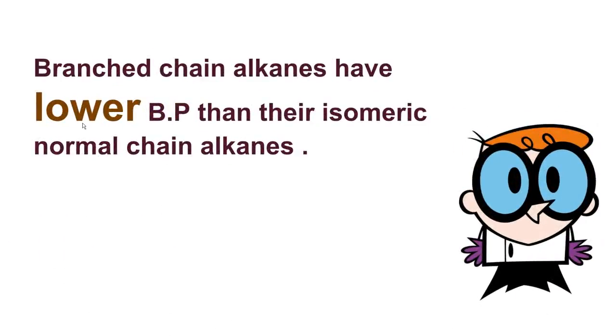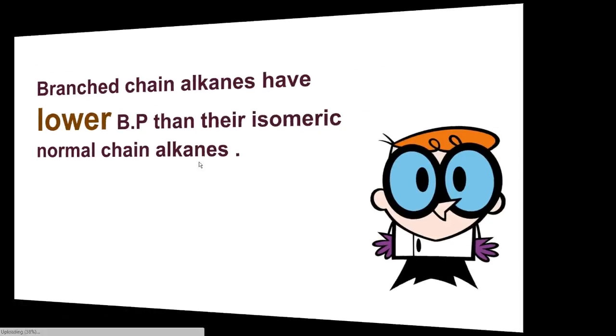The branched chain alkanes have lower boiling point than their isomeric normal chain alkanes. Now let's see the reason behind it.